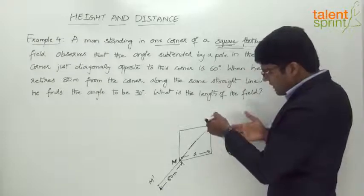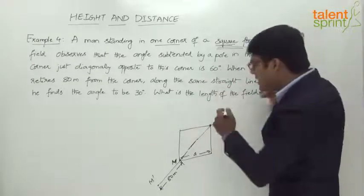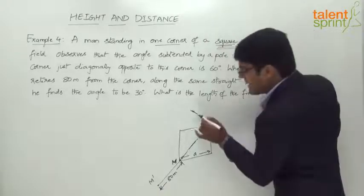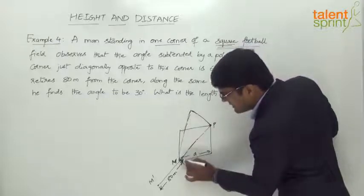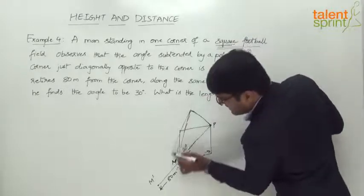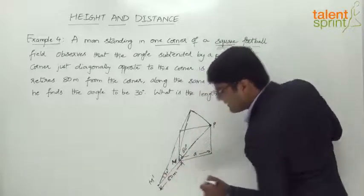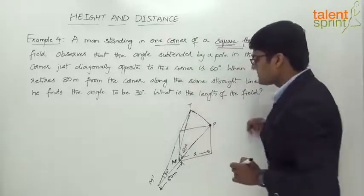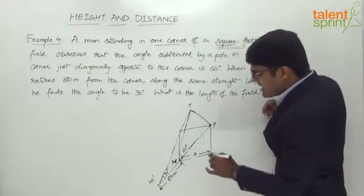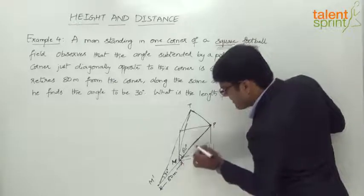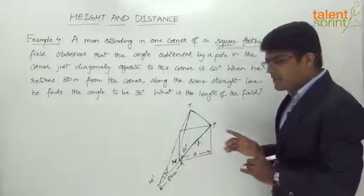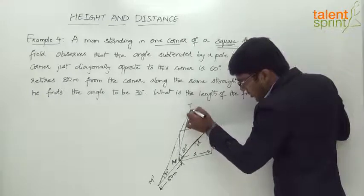To give a 3D view, the pole is vertical of course but this is like a 3D diagram. The angle subtended at M will be 60 degrees initially. When we consider the triangle at M dash, the angle subtended by the pole is 30 degrees. Let us say the top of the pole is T. The diagonal of the square field is D, the side is A, and the diagonal is D. Now here we have two right-angled triangles. The pole with the ground will be at right angle — this angle is 90 degrees.